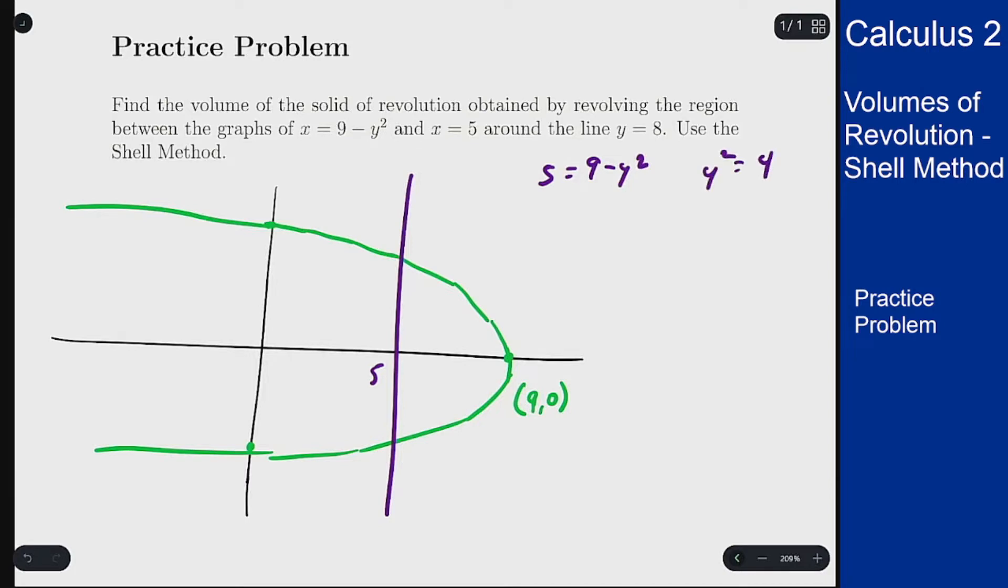So y is plus or minus 2. So this point here is at 5, 2 and this here is at 5, minus 2. And we're going to revolve around y equals 8, which is way up here somewhere.